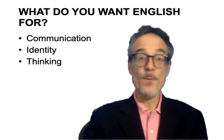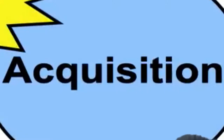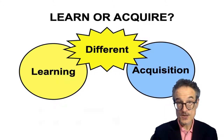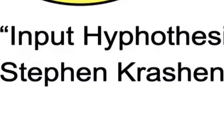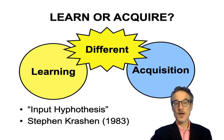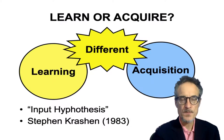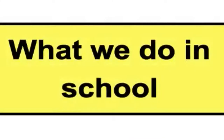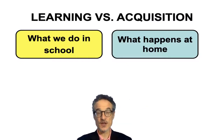The next thing to think about: do you want to learn or acquire English? Learning and acquisition are not the same. This is based on a theory called the Input Hypothesis, developed by Stephen Krashen in the 1980s. He hypothesized that learning and acquisition are two different things. Learning is what we do in school; acquisition is what happens at home. When I was a baby playing at home, I was acquiring English. At school I studied French — that was learning.